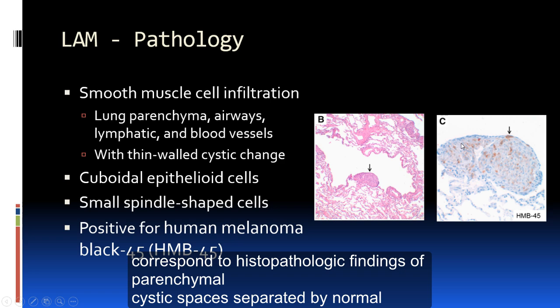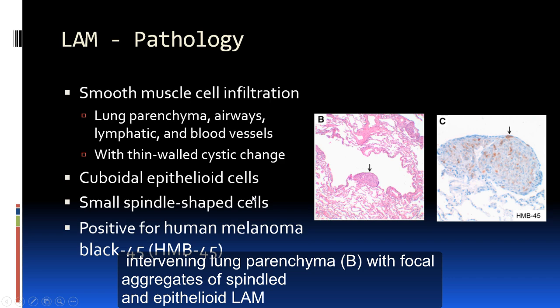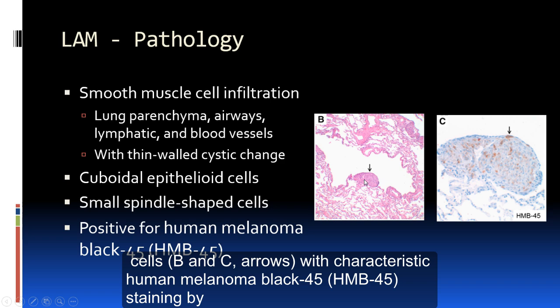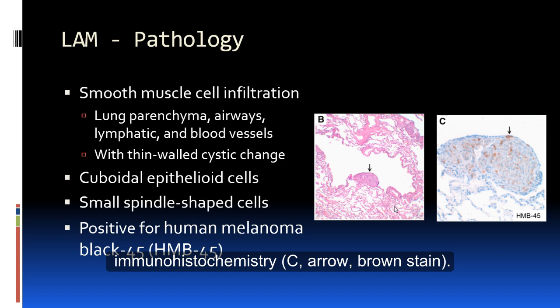Pathologically, LAM is characterized by smooth muscle cell infiltration in the lung parenchyma, airways, lymphatics, and blood vessels, with thin-walled cystic changes visible on histology. In LAM lesions, cuboidal epithelial cells appear at the periphery of the nodule, while the center is populated by small spindle-shaped cells. LAM lesions are also positive for human melanoma black 45 (HMB-45) on immunostaining.